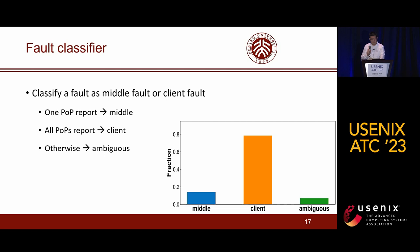The third case includes other situations, where the probability of middle fault and client fault both decrease significantly. The classifier then determines this fault as an ambiguous fault. We found that it only accounts for 7% of cases and we currently ignore it.